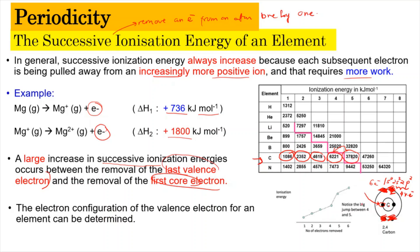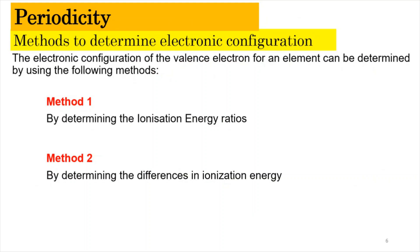Because of these properties, when you see a large increase in successive ionization energy, you know it represents the transition from removing the last valence electron to removing the first core electron from the inner shell. This allows us to determine the electronic configuration of the valence electrons easily. There are two methods: Method 1 is by determining the ionization energy ratios, and Method 2 is by determining the differences in ionization energy.